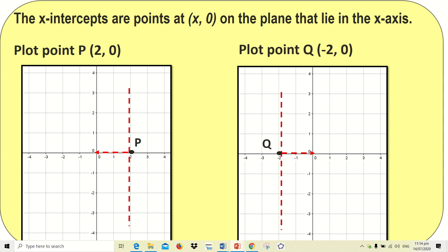Again, the lines are just your guide in plotting the points. You can erase those lines after you plot the points. So that is how you plot an x-intercept.